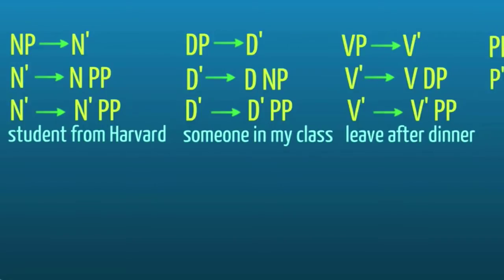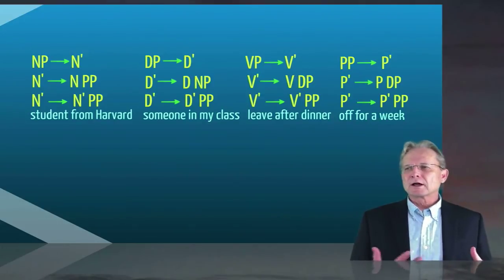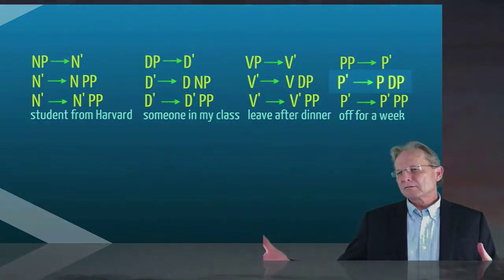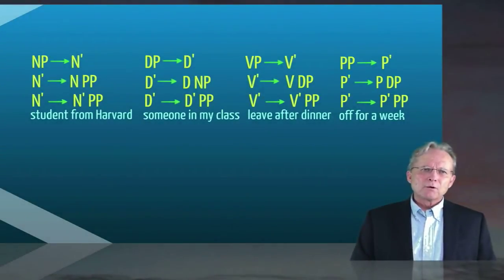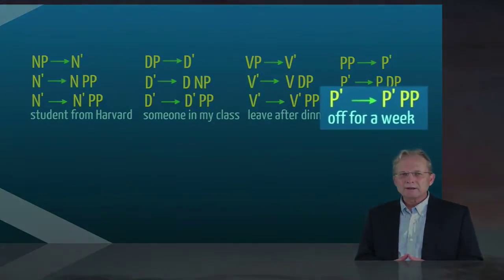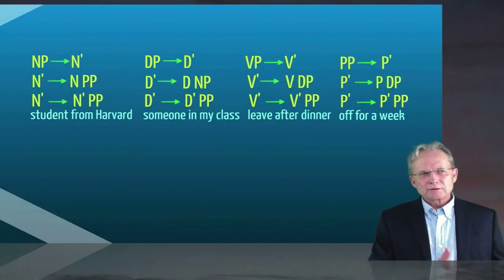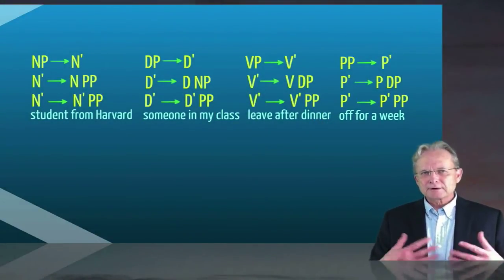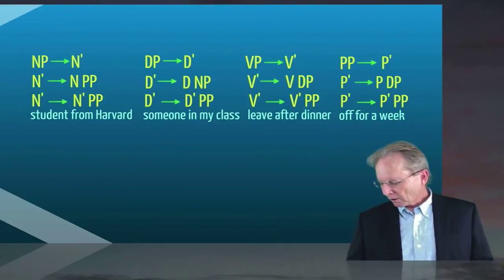And a PP has the same set of possibilities. So we can have the preposition functioning as the head with a complement, which is typically a DP. Or we can add an adjunct to the right, as in the case of off for a week. So student from Harvard, someone in my class, leave after dinner, off for a week are all different versions of the same basic structure with an adjunct added into a larger phrase.